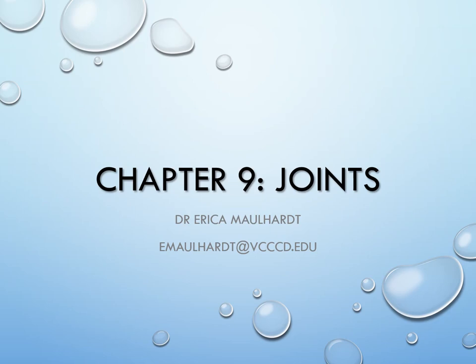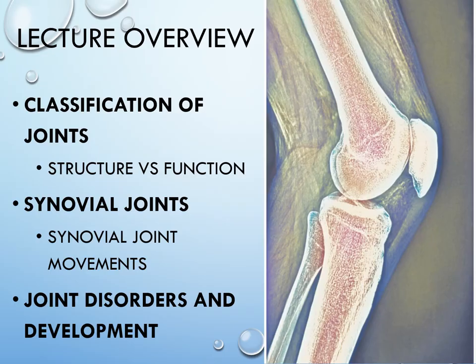Welcome everyone. Today is chapter nine — we're going to talk about the joints, which will finish up our unit on the skeletal system. First, we'll talk about how we classify joints using structure and function. Then we'll spend most of the time talking about synovial joints, which are the ones that have a lot of movement and joint fluid. We'll also go over some joint disorders and a little bit about development.